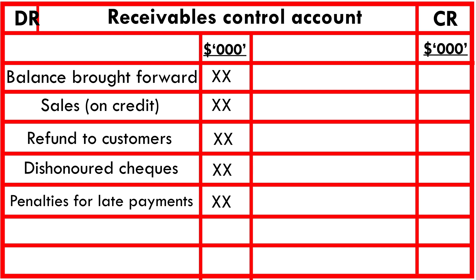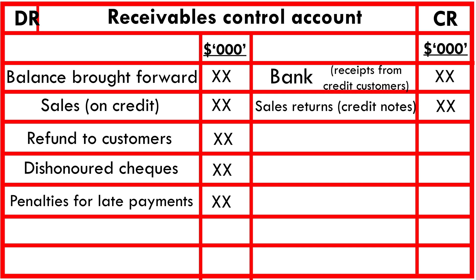Items that decrease the receivables balance appear on the credit side. These include receipts from credit customers (shown as bank), sales returns — with credit notes issued because of the returns — and irrecoverable debt written off, which is the part of receivables confirmed as unrecoverable, perhaps due to disputes or the bankruptcy or financial difficulties of the customer.